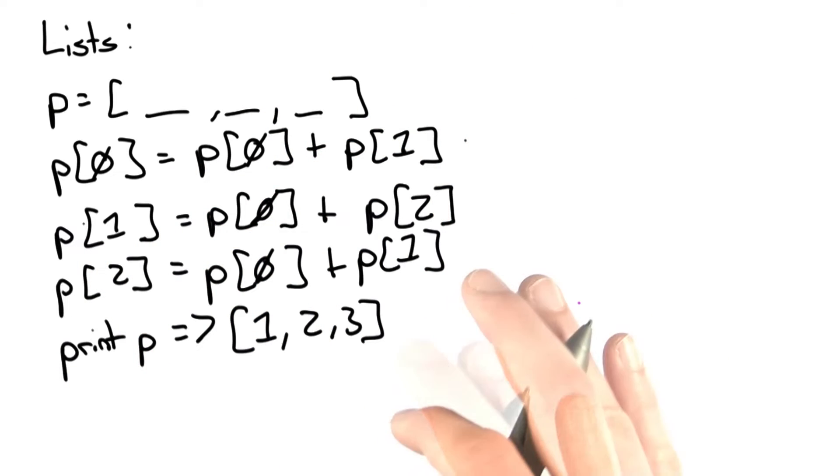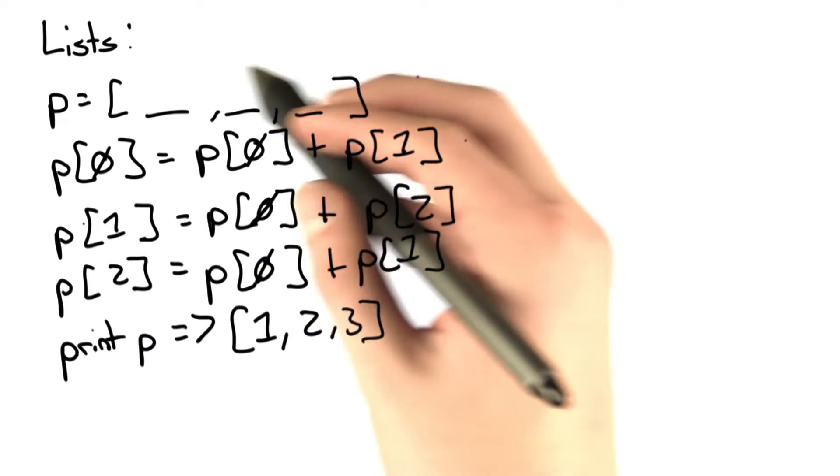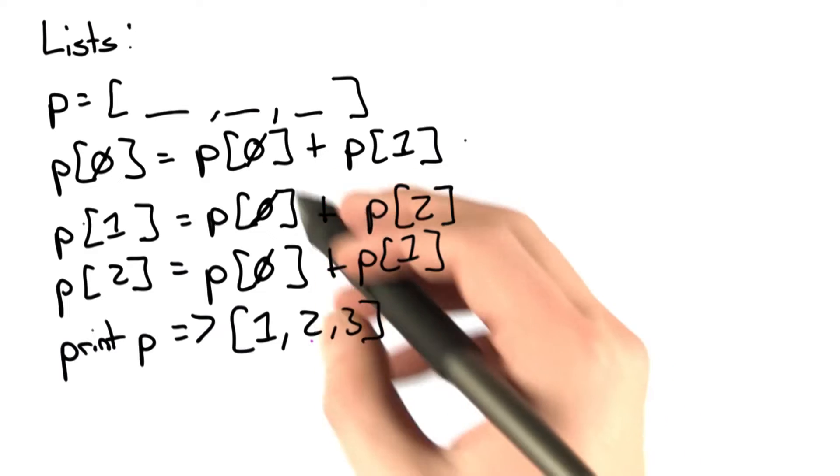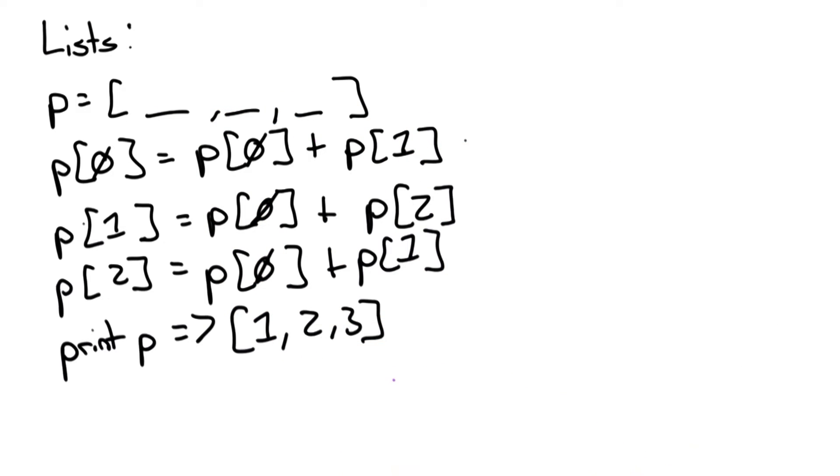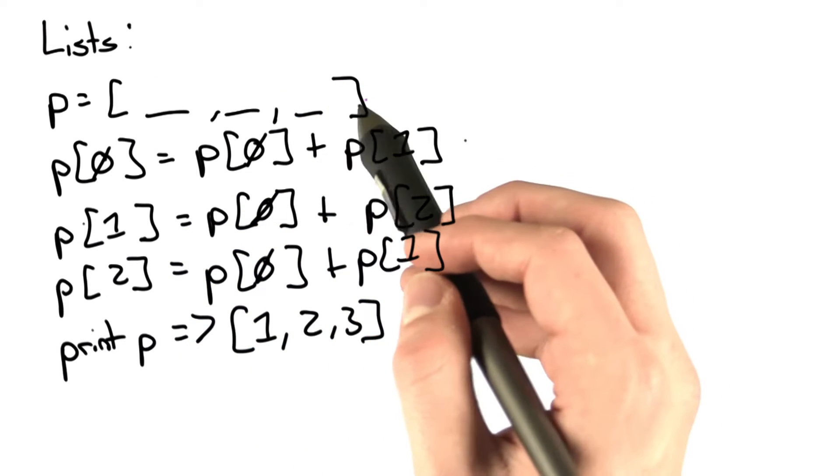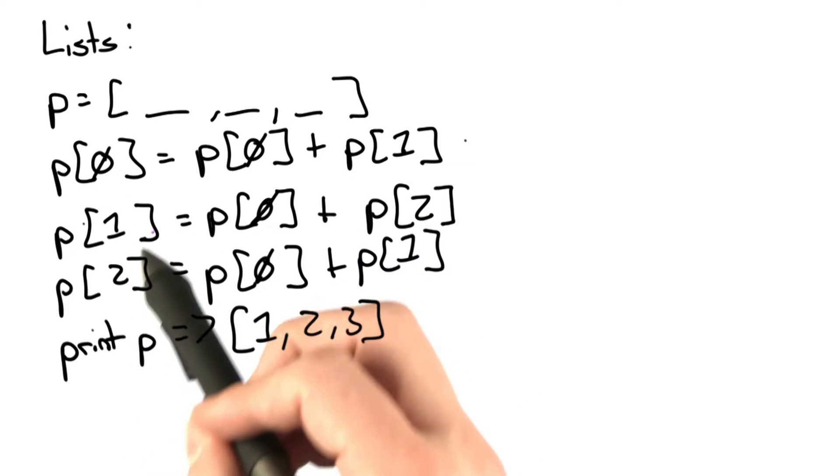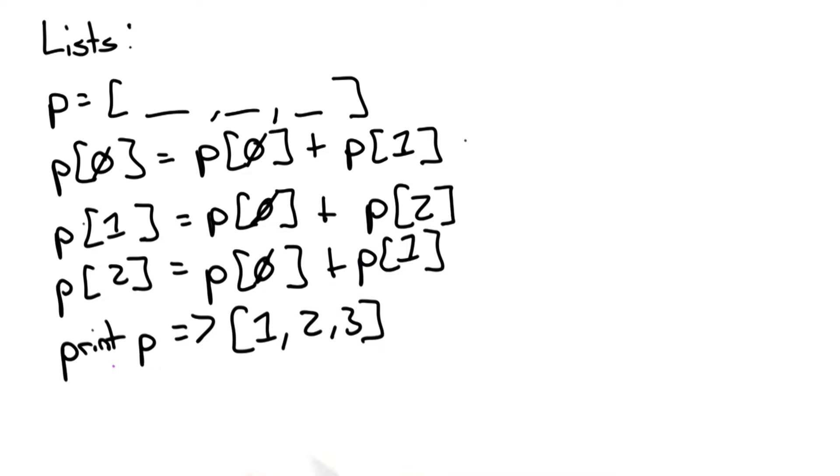Here we're given some code, and we have to fill in the blanks such that if we execute this code and print the list p, we get the output 1, 2, 3. We have to find the initial values of p, and then we update each entry in p once and only once.